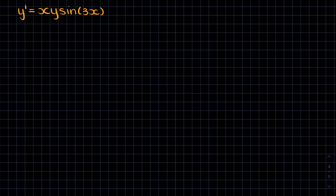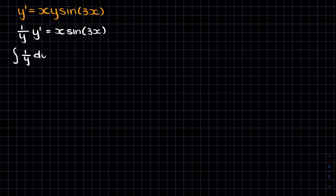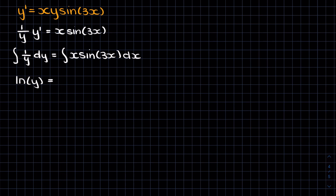Here we can start by dividing by y, so we'll get (1/y)·y prime equals x·sin(3x). Now we can take the integral and we'll get the integral of (1/y) dy equals the integral of x·sin(3x) dx. On the left hand side the integral of 1/y is just the natural logarithm of y. On the right hand side we have x times a sine — two terms multiplied by each other — so we should use integration by parts.